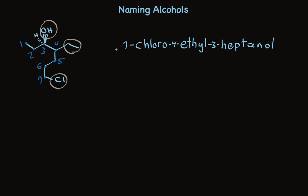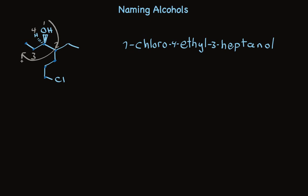We're close to done, but we still need to designate the stereochemistry at the stereogenic center. Using the Cahn-Ingold-Prelog rules, we assign priority to each of the four groups attached. The hydroxyl is priority 1, hydrogen is priority 4. The carbon with substituents on it is higher priority than the CH2 carbon. Ignoring priority 4, we go in a circle from 1 to 2 to 3 — clockwise — so we call this the R configuration. A name that lets everybody draw exactly the same structure.